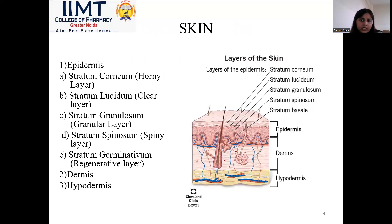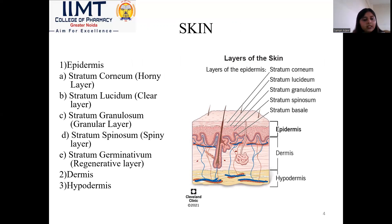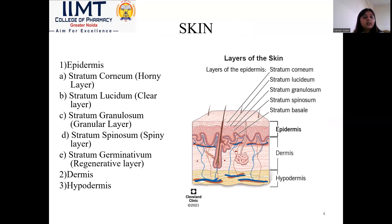Now let's have a look at the structure of the skin. Basically, the skin is made up of three layers: epidermis, dermis, and hypodermis. The epidermis is the uppermost layer of the skin and is further classified into five layers: stratum corneum, also known as the horny layer; stratum lucidum, the clear layer; stratum granulosa, the granular layer.